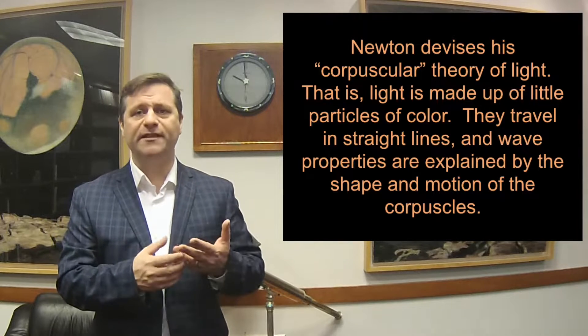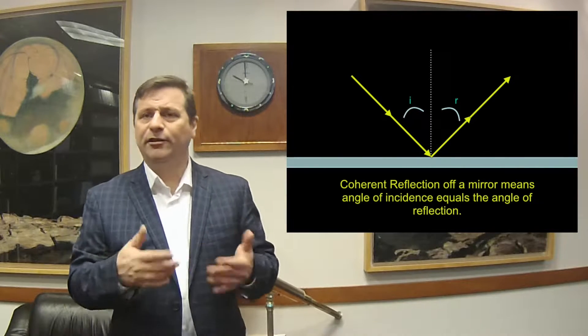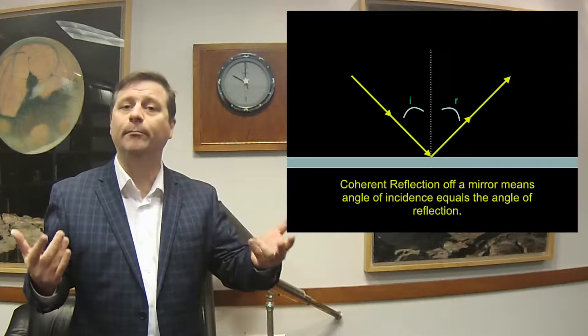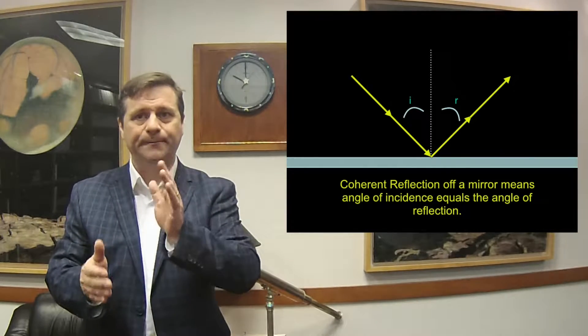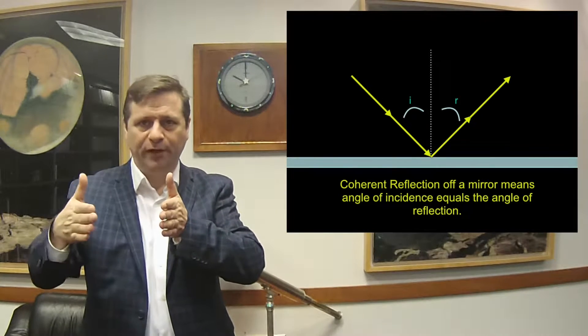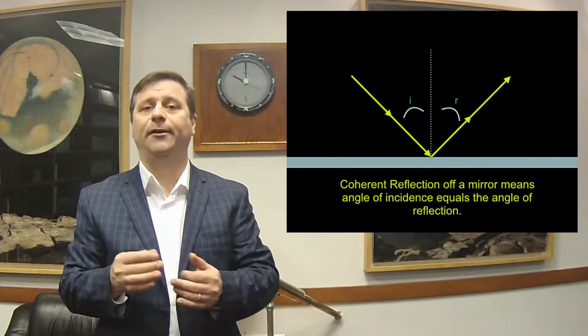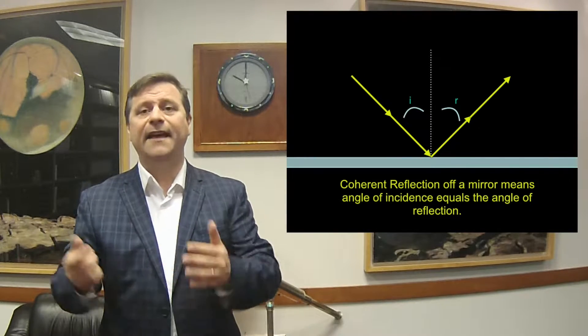Why did he think that? Because with his experiments on light, he reasoned: if you bounce something off a surface, like a ball bouncing off a smooth surface, the angle of incidence equals the angle of reflection. So if you take a beam of sunlight through a tiny hole in a curtain, and it hits a mirror, it reflects off in a new direction — and the angle in equals the angle out with respect to the vertical. Newton said that since light does that, and that's what particles do, light must be a particle; otherwise you wouldn't have this property of reflection.